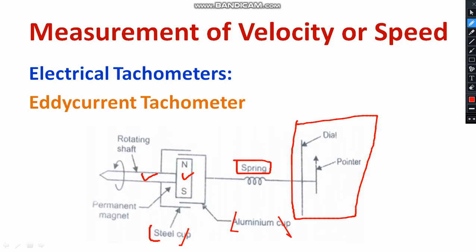Here, as the rotating shaft moves, shaft is rotating in this direction. With respect to the rotation, what is going to happen means, the eddy current will be generating in the steel cup and aluminum cup. Eddy current is going to generate. Due to the eddy current, the torque will be produced. With respect to the torque, the deflection will be taken place here. You will be getting the measurement. With respect to the torque, you are able to get the measurement.